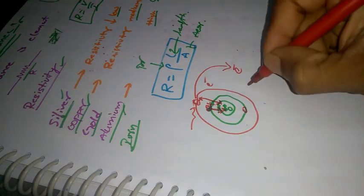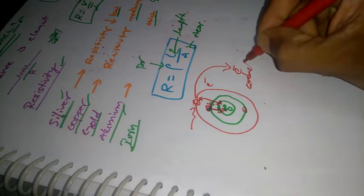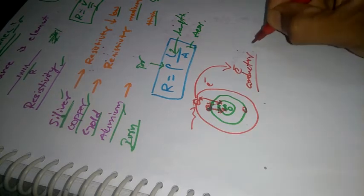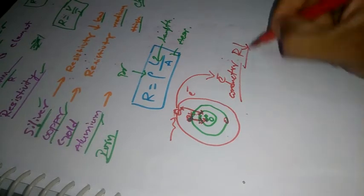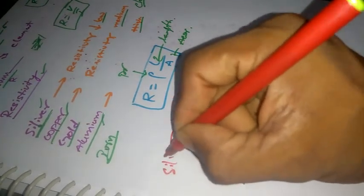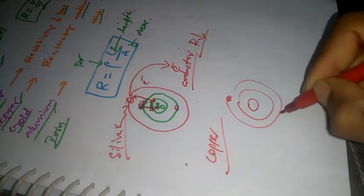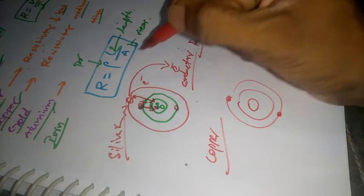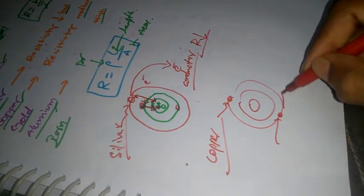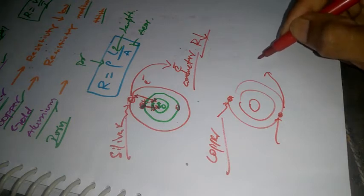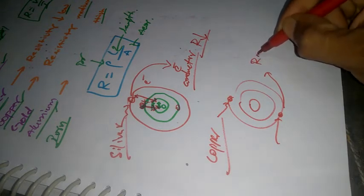Good conductor. And then resistivity is lower. So silver has low resistivity, and that is copper's resistivity as well. Then, valence electrons is 3, and this is 1 — it is easy to move. This means energy is extra, so it is medium.